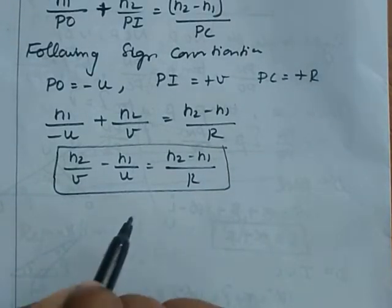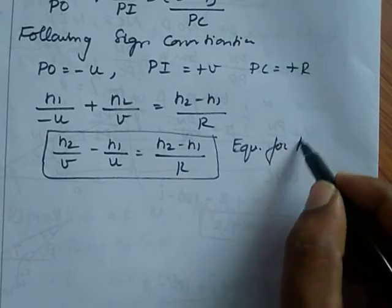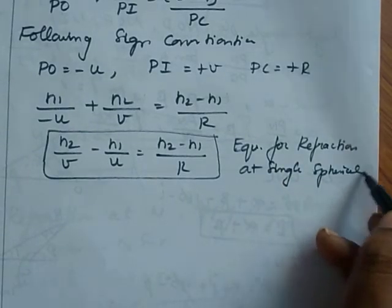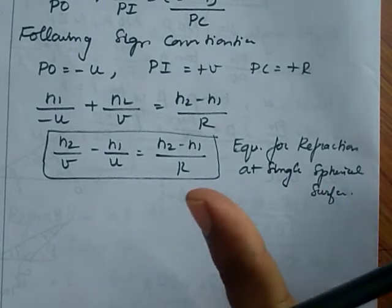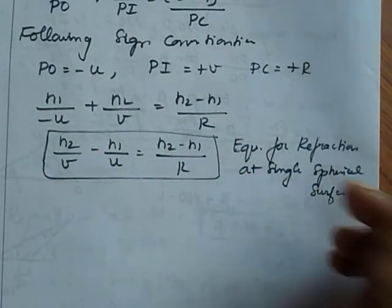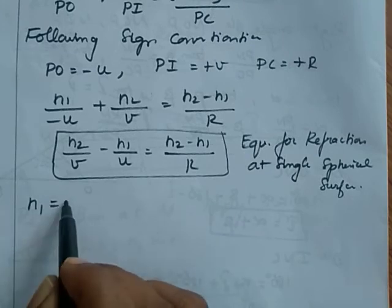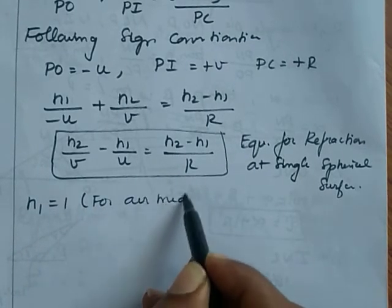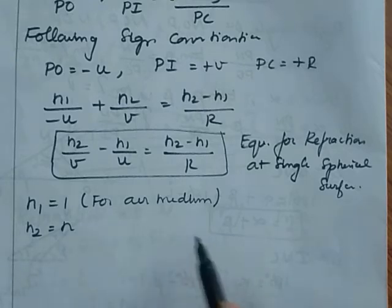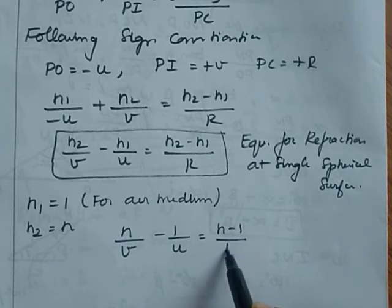This is the equation for refraction at a single spherical surface. We can apply this expression for any spherical surfaces because we have already applied the sign convention. If suppose I consider the first medium as air, then N1 = 1, and N2 = N. Then the equation becomes N/V - 1/U = (N - 1)/R.